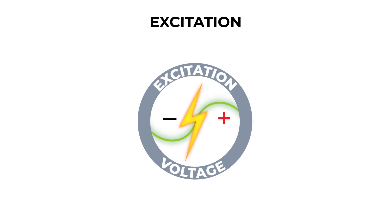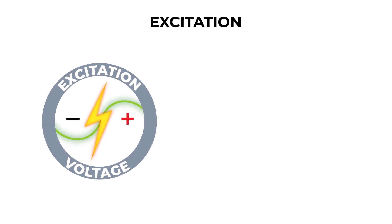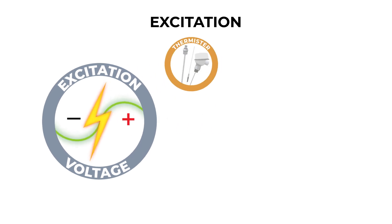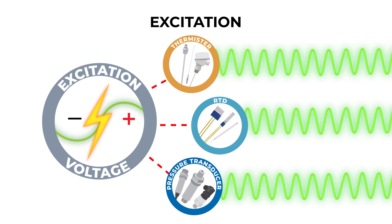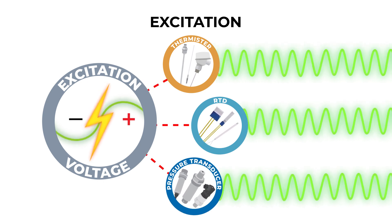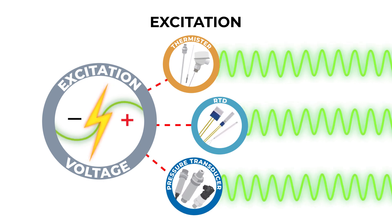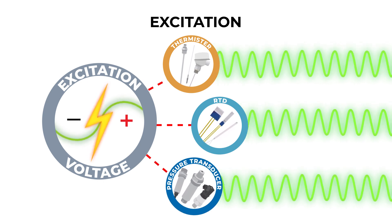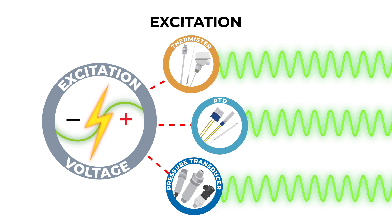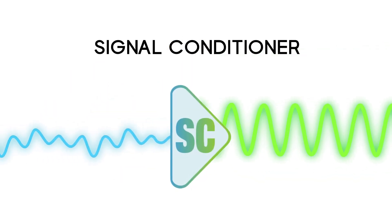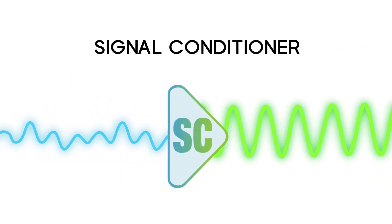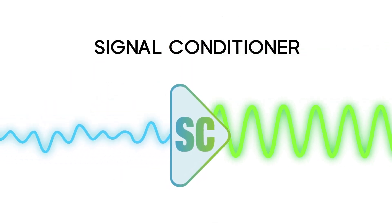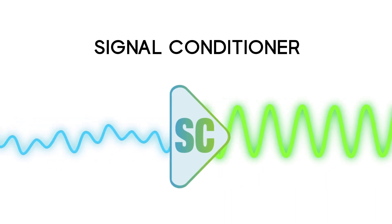Excitation voltage is required for the operation of an active sensor such as a thermistor, RTD, or a pressure sensor. The stability and accuracy of the excitation signal directly affects the stability and accuracy of the sensor. So when you're speccing out a process measurement system, be sure not to overlook the importance of signal conditioning.